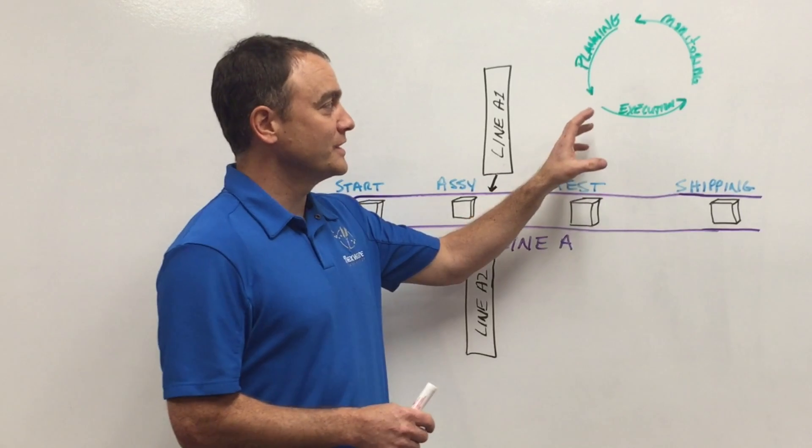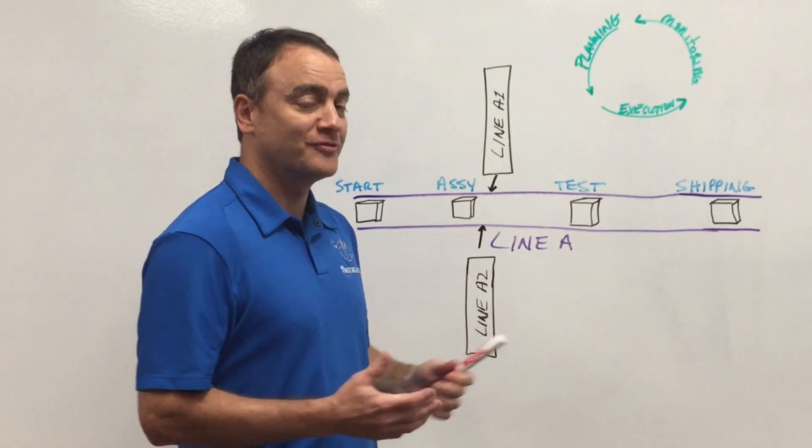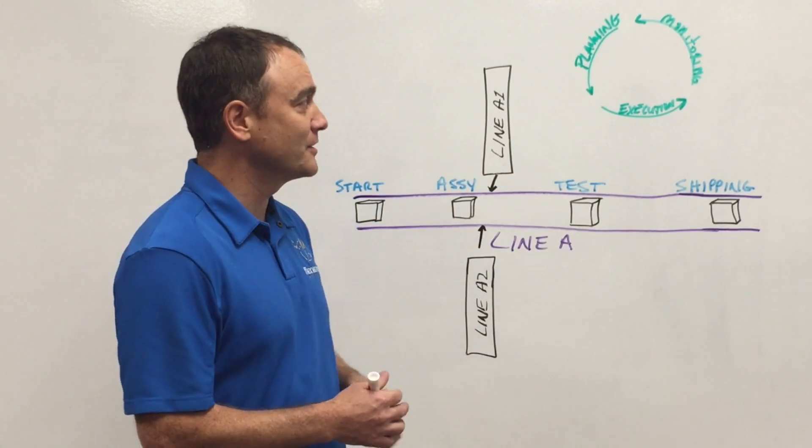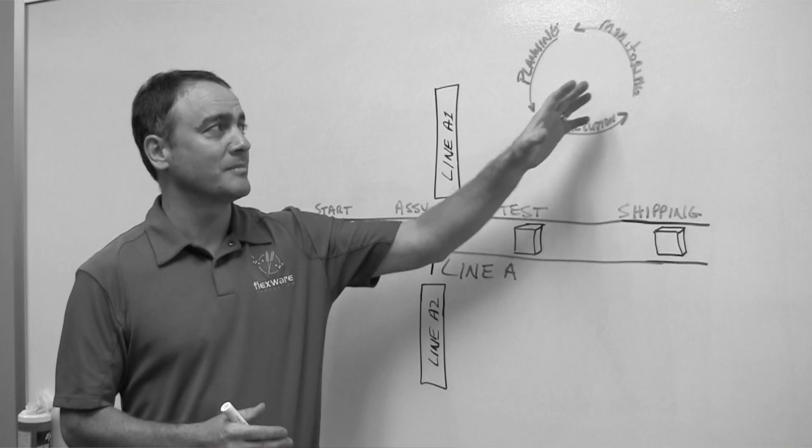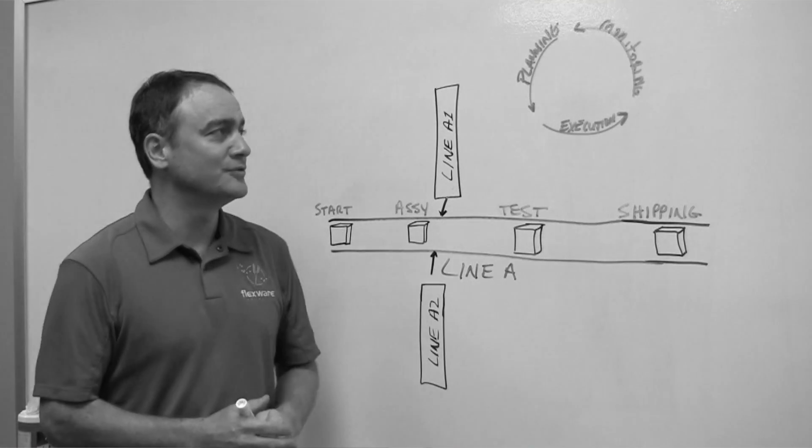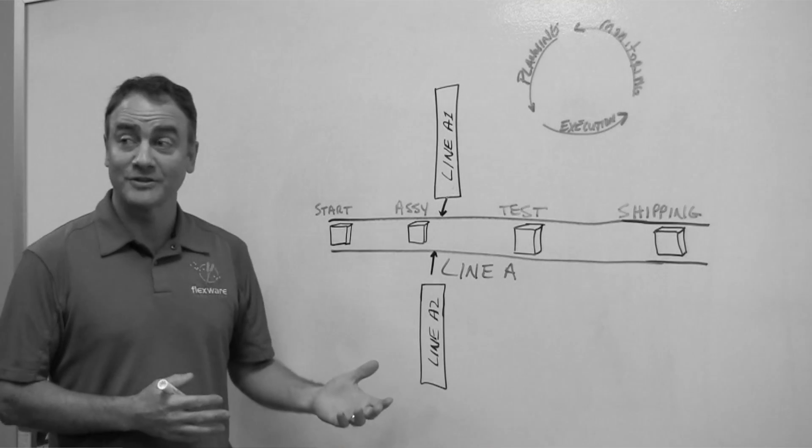So one of the things that we have defined as some flows within the manufacturing environment are the planning, execution, and monitoring flows. And we kind of use these as we refer to what MES systems do.